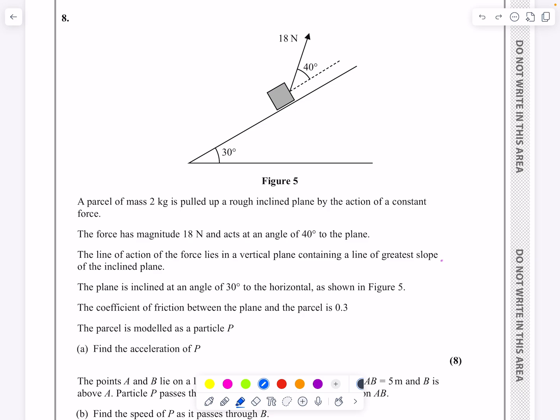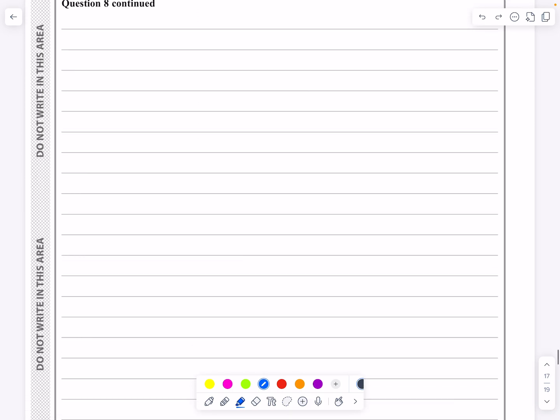So what we've got to do is to find the acceleration of P. So what I'm likely to do then is to get all my forces. Once I've got my forces, resolve them parallel and perpendicular to the plane and see where we go from there. Let's get started with the diagram.